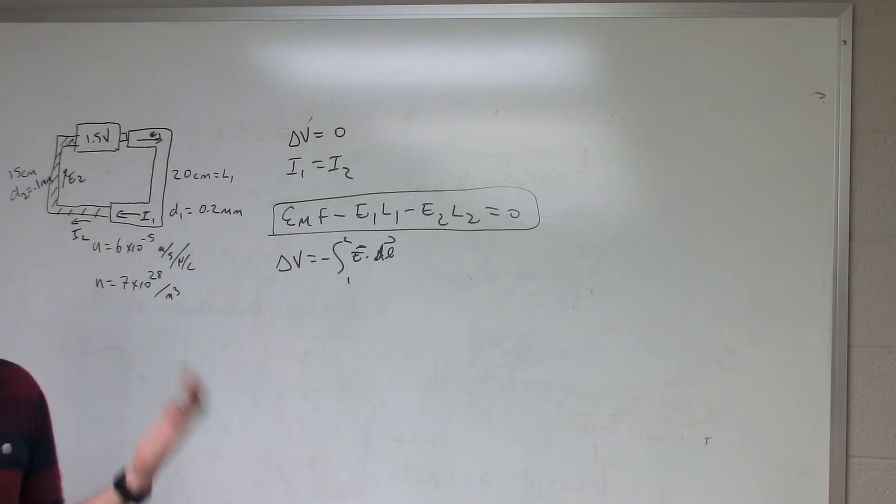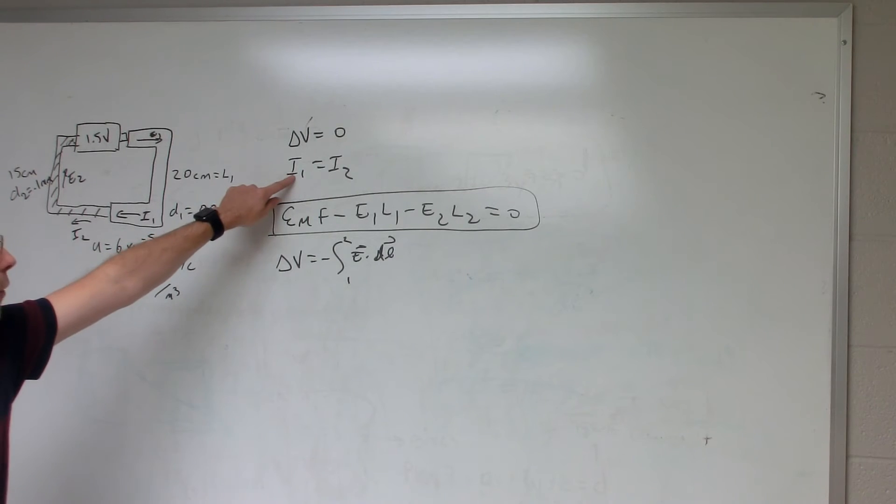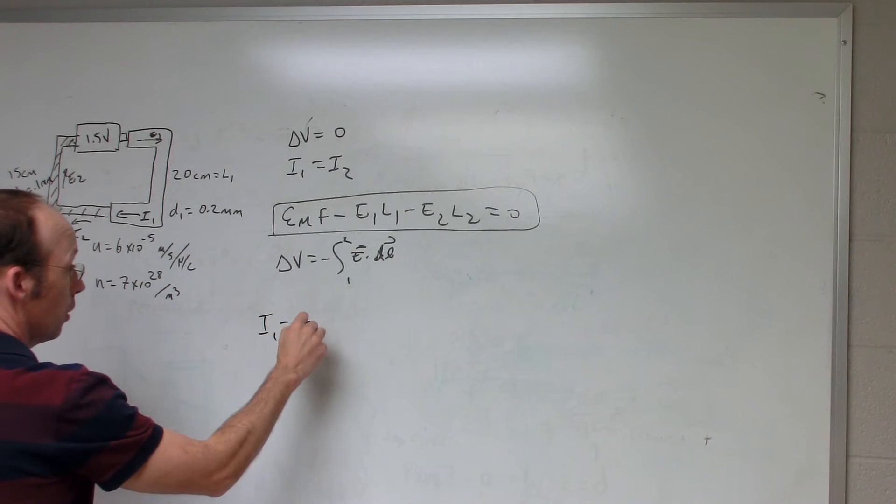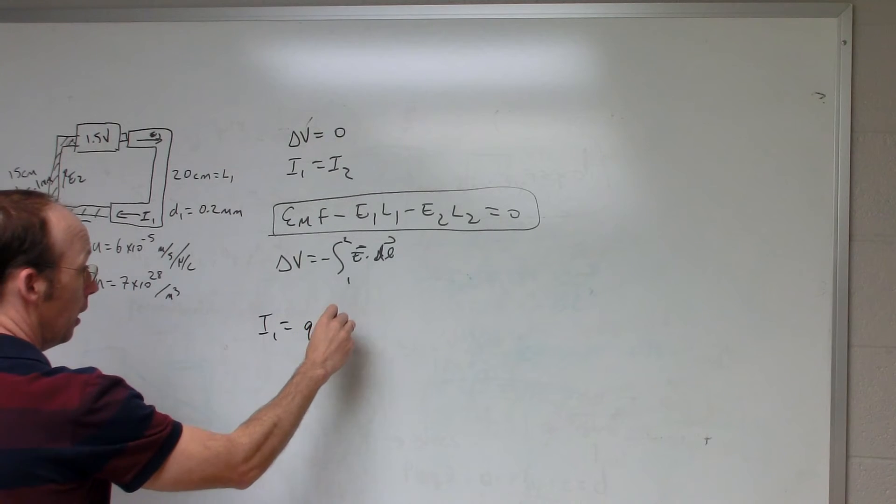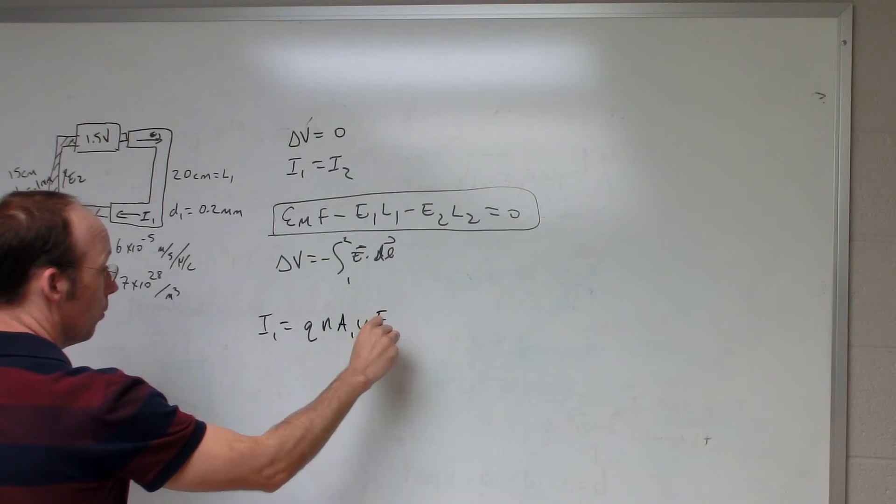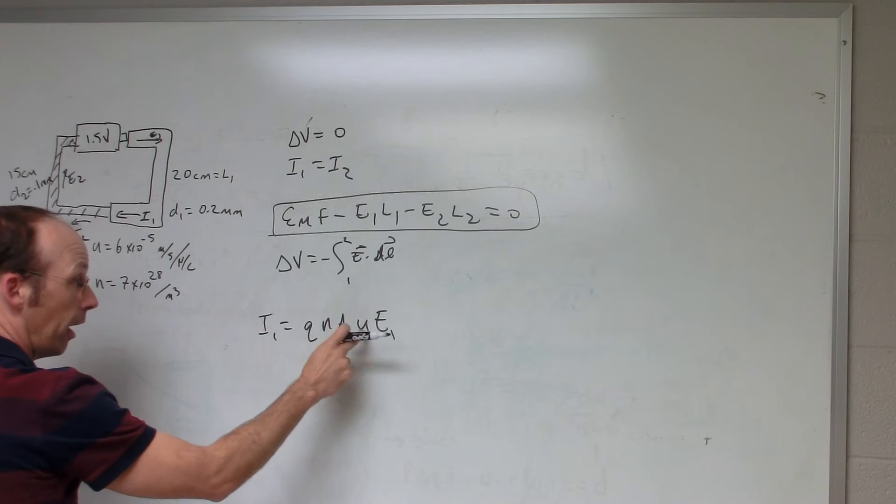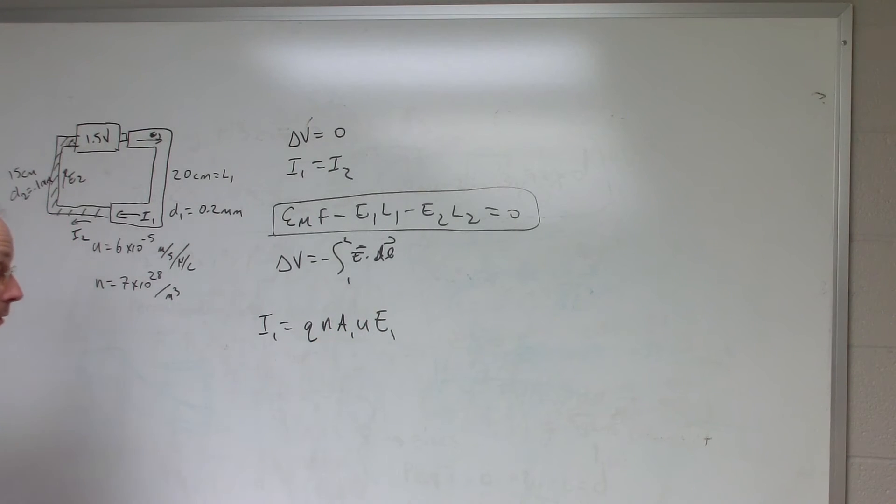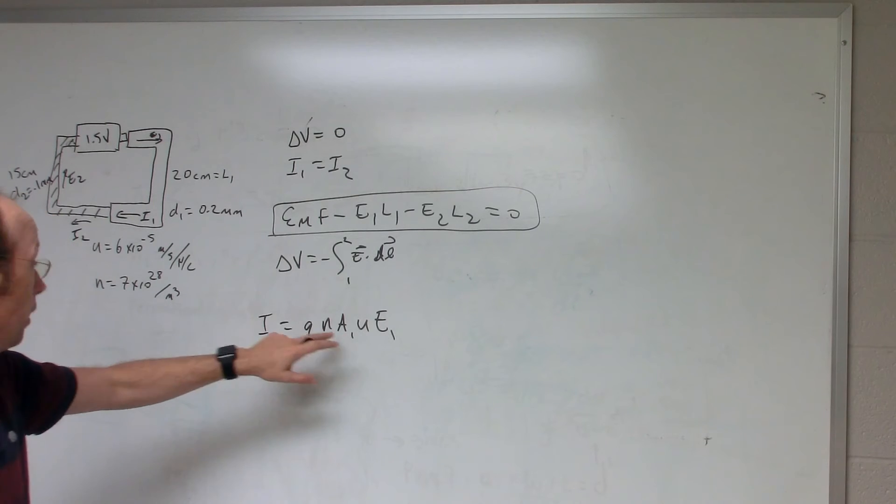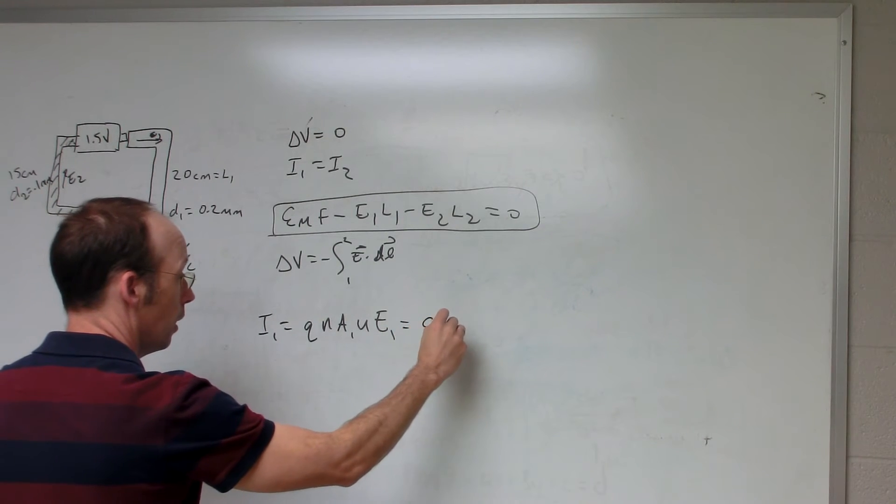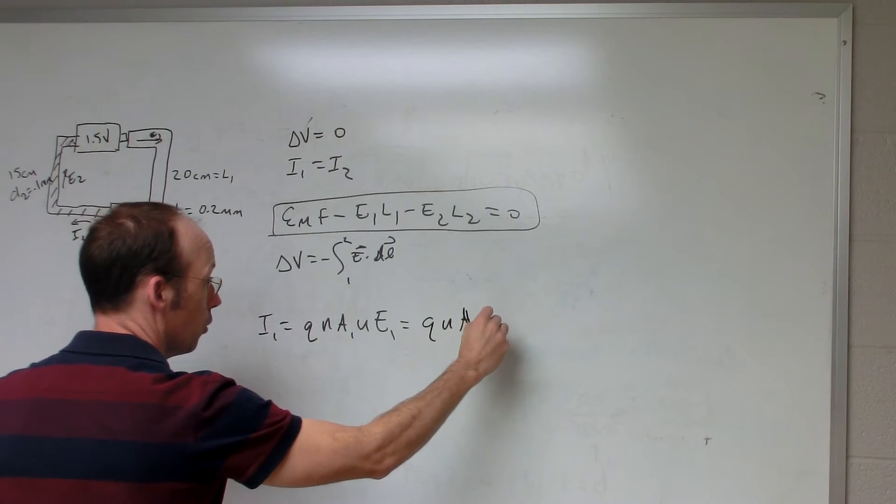I can't solve for E1 and E2 because I only have one equation. However, I can use this equation. I can say the currents are the same. And I can write the current I1 is equal to Q n A1 U E1. So it's the charge carrier density, the cross-sectional area of the wire, the electron mobility, and the electric field. And I've labeled this as A1 because A1 is different than A2. And this would be equal to Q n A2 U E2.